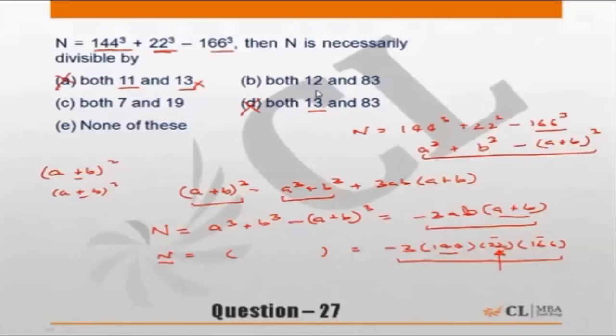Let's look at choice B now: 12 and 83. It is a multiple of 83 because the number is a multiple of 166, so 83 is possible. 12, yes, multiple of 12 also because it's a multiple of 144. So both of these are possible, so choice B becomes the correct answer.